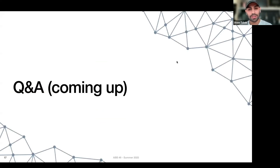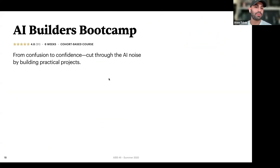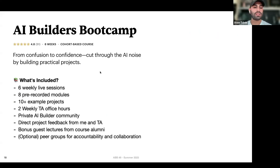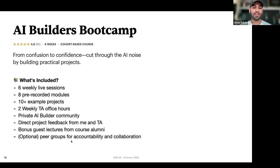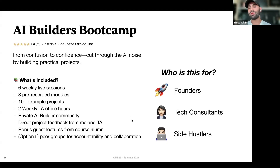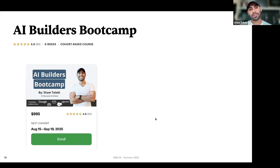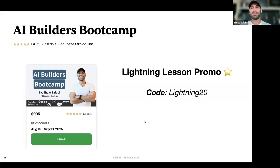We'll do Q&A in a second, but I'll spend 60 seconds talking about the AI Builders Bootcamp. Next cohort starts August 15th — it's a six-week cohort with weekly live sessions, pre-recorded modules, a bunch of code examples, weekly TA office hours, a private community of builders, and direct project feedback from me and our TA Bryce. We also have bonus lectures from course alumni and peer groups. This is really made for tech founders, tech consultants, and side hustlers trying to build with AI. The course is $995, but as a bonus for joining this lightning lesson, you can get a 20% discount using the code LIGHTNING20 at checkout.